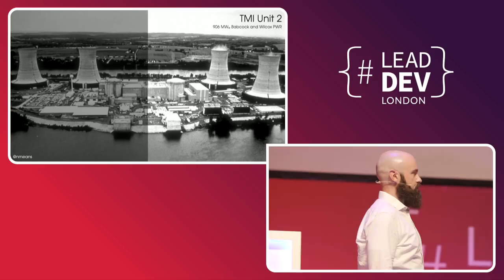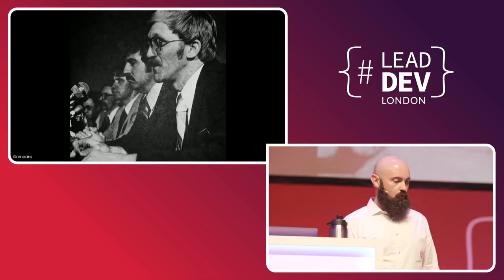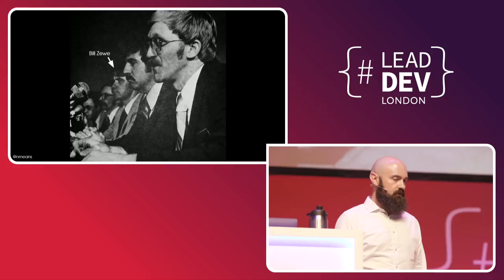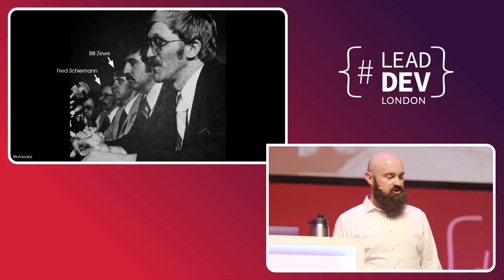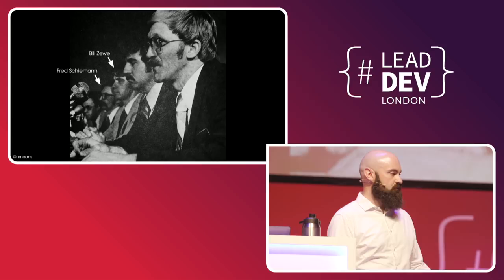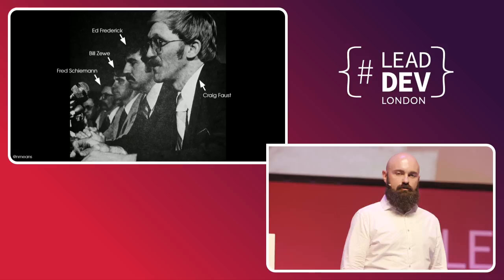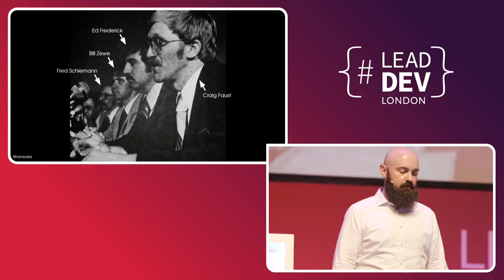These four men are at the controls of Three Mile Island Unit 2 for the overnight shift on March 28. Bill Ziwi was the shift supervisor — it was his plant that night, he was in charge. Fred Scheman is the shift foreman for Unit 2, running operations and serving as Bill Ziwi's second in command. Ed Frederick and Craig Faust are the control room operators on duty — they're the ones actually sitting at the controls of the reactor. Everything was running pretty normally that night, except for a small problem in one of the condensate polishers that the previous shift hadn't been able to solve.